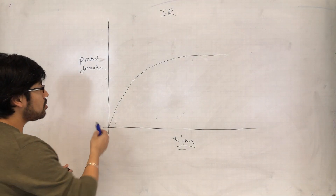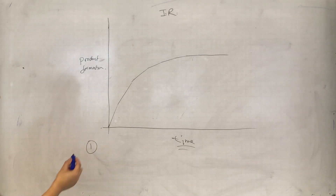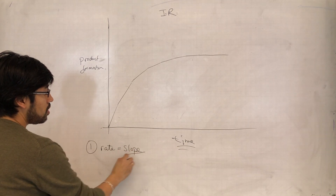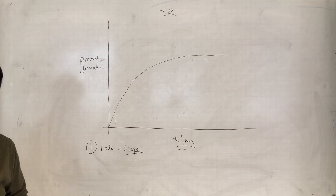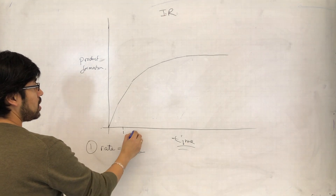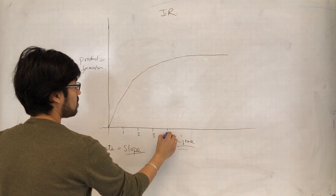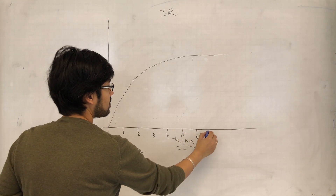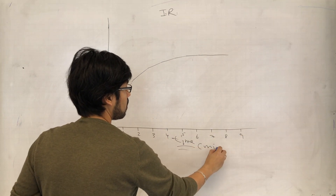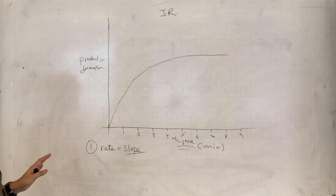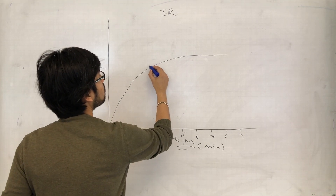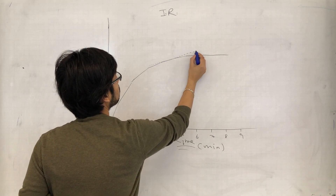The first rule we need to understand is that the rate of the reaction is equal to the slope of the line at any point. So, if that was one minute, two minutes, three minutes, four minutes, five, six, seven, eight, and nine — measuring time in minutes — if I asked for the rate at four minutes, I would have to work out the slope of the curve at that point. What I would do is draw a tangent at time four minutes with my ruler, make it touch the line at that point.